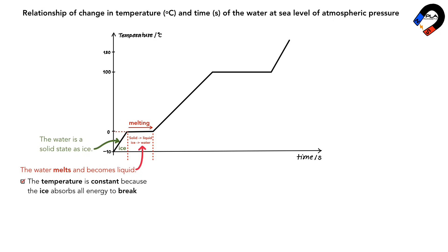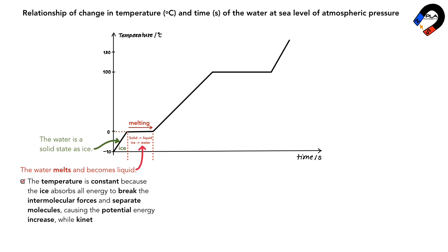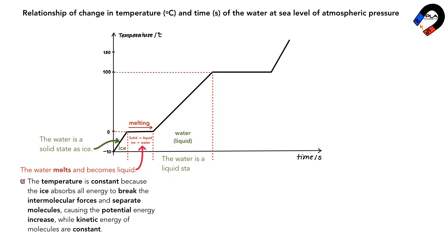At melting, the temperature is constant because the ice absorbs all energy to break the intermolecular forces and separate molecules, causing the potential energy to increase while the kinetic energy of molecules remains constant. Between 0 and 100 Celsius, the water is in a liquid state.